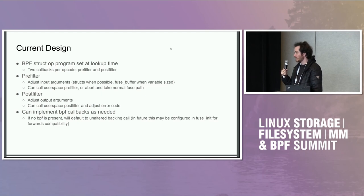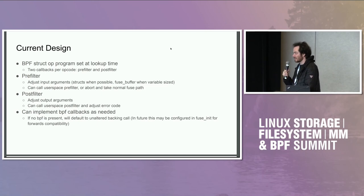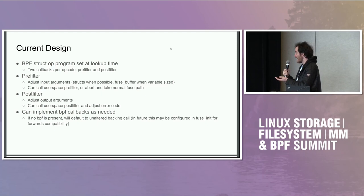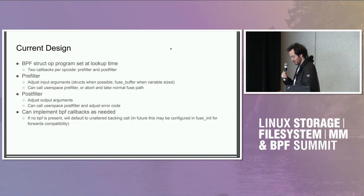We also have the option from this BPF program to say we want to just use normal fuse and fall back to that path. One of the nice parts about the struct ops implementation is you only need to implement what you need. To give a very dumb example: if your stacked file system was just adding a character at the end of every file name, you would just do an adjustment in lookup and do some things for read dir. If you're doing minimum changes, you only have to worry about the specific sections that you care about changing.